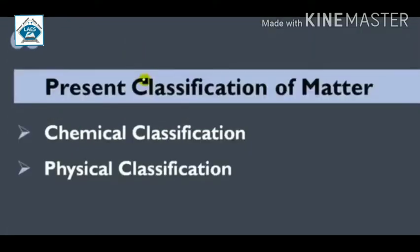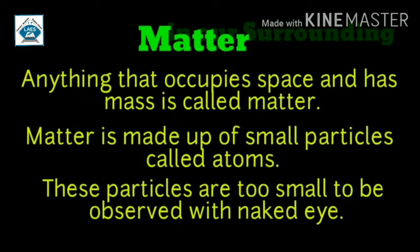But, modern scientists classified matter based on their chemical and physical properties. अब जानते हैं matter के बारे में. तो, children, वो हर एक चीज, वो हर एक object जो अपनी space occupy करती है और जिसका अपना खुद का एक mass है, volume है, वो हर एक चीज होती है matter.